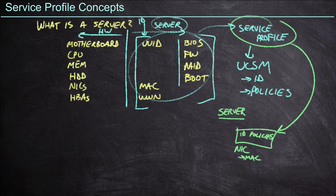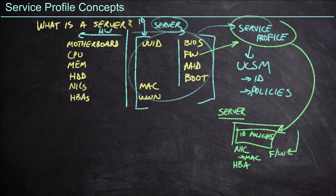This will apply to other identity points as well — such as if we've got an HBA from a fiber channel perspective, or a motherboard receiving a new UUID. Furthermore, if we've got a firmware policy and this piece of hardware has the wrong firmware on it, the service profile will push the correct version of firmware down before it actually loads and boots the server. As much as possible, we are stamping the intended image and intended purpose of the server down onto an arbitrary piece of hardware. The hardware becomes arbitrary — we no longer care exactly what it is, because we are going to completely overwrite whatever the hardware has and deploy exactly what we want.